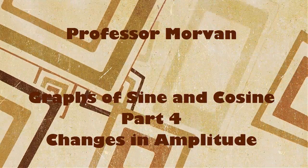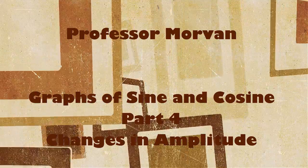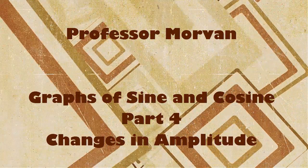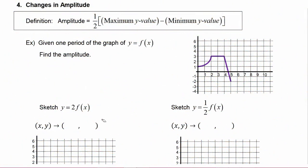In part four of our lesson on graphs of sine and cosine, we're going to study how changes in amplitude affect the graph. First we need a definition: for periodic functions, amplitude is defined to be one-half of the maximum y-value minus the minimum y-value.